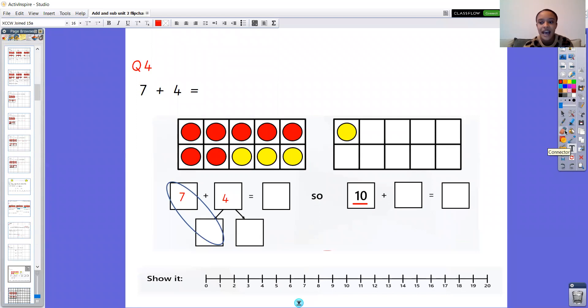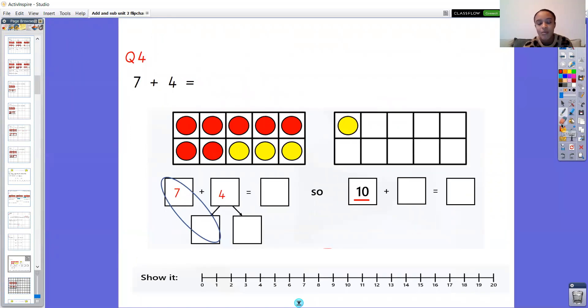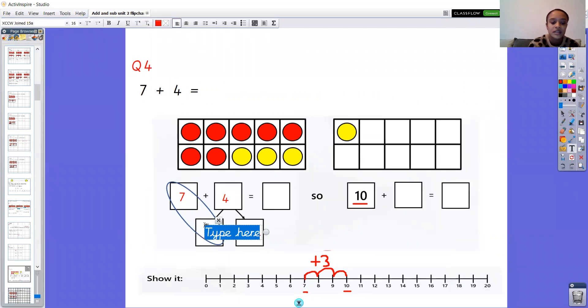Fantastic. Okay what do we add to seven to get to 10? We add three. So if we use our number line to check, we start on seven, we do one, two, three, I've got to 10, add three. Okay so I'm going to pop that three in this box. Can you see now that the seven and the three are the same as this number here, that gives us 10.